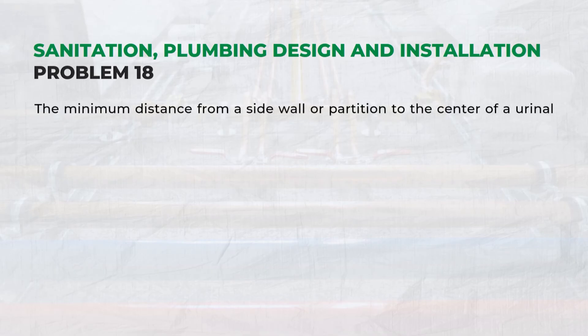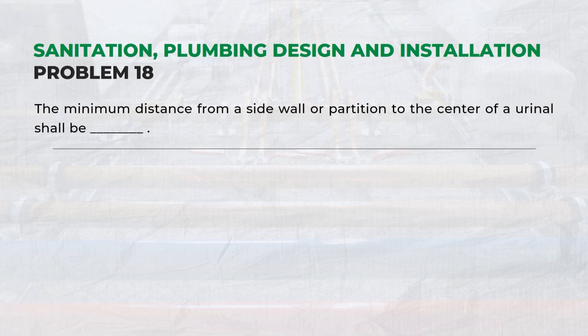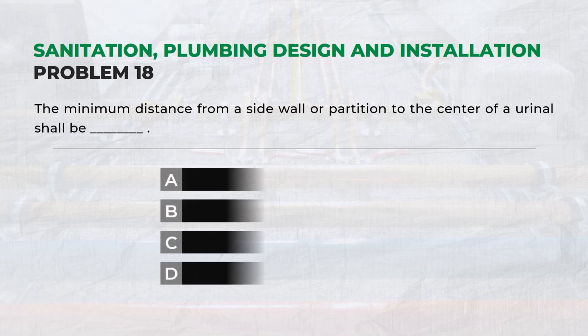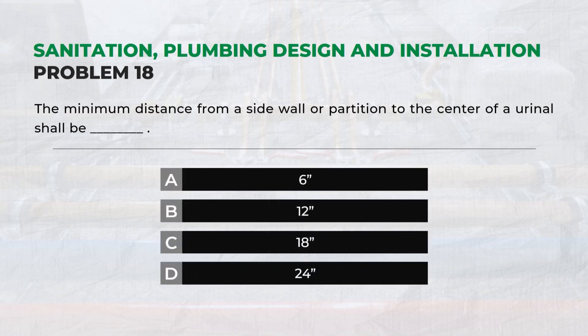The minimum distance from a side wall or partition to the center of a urinal shall be — Answer: B. 12 inches.